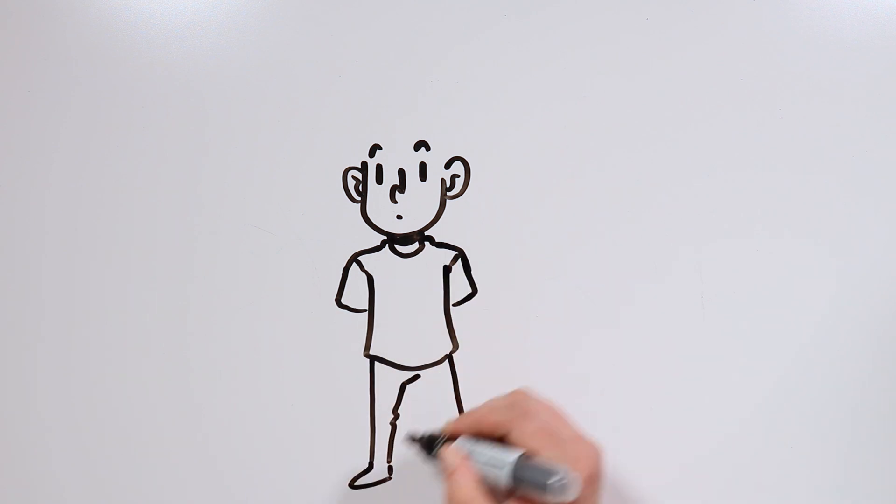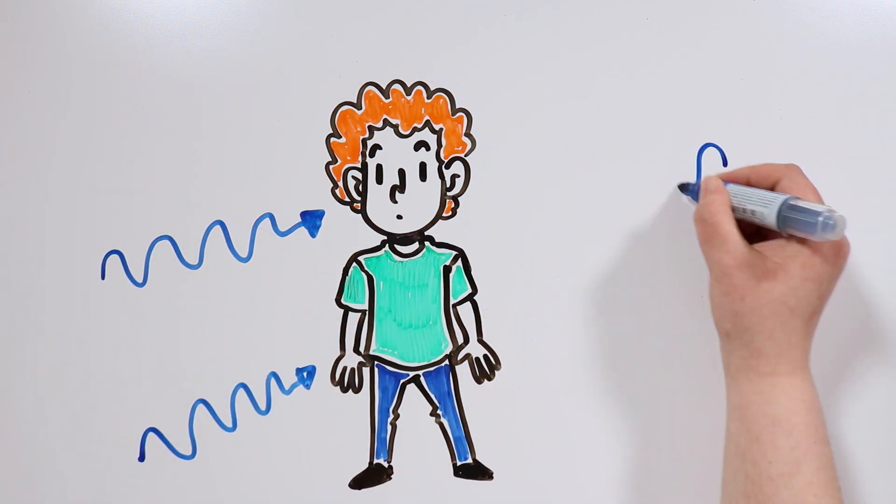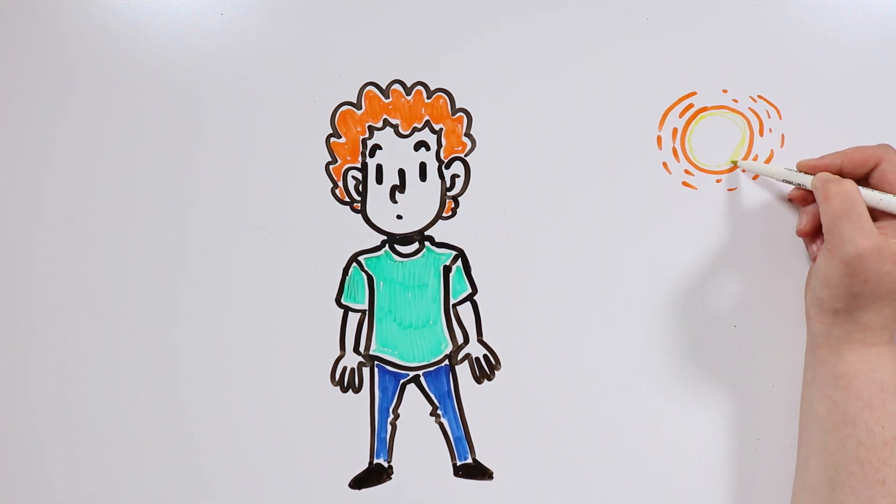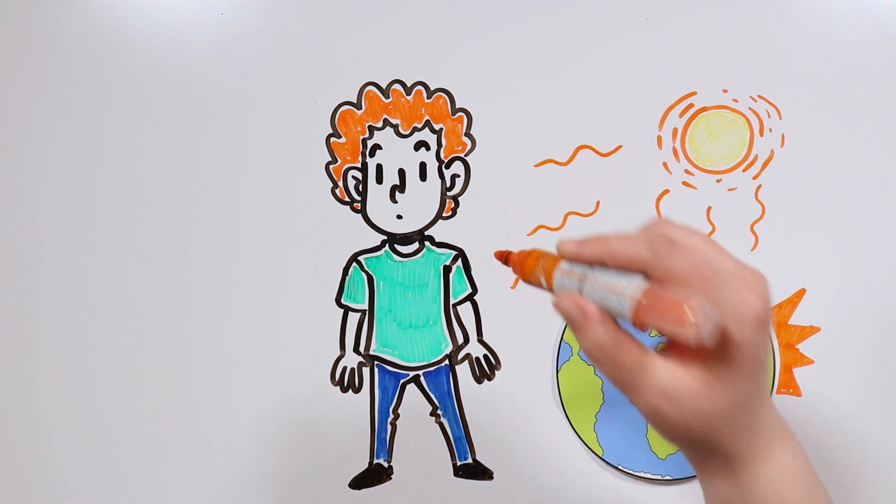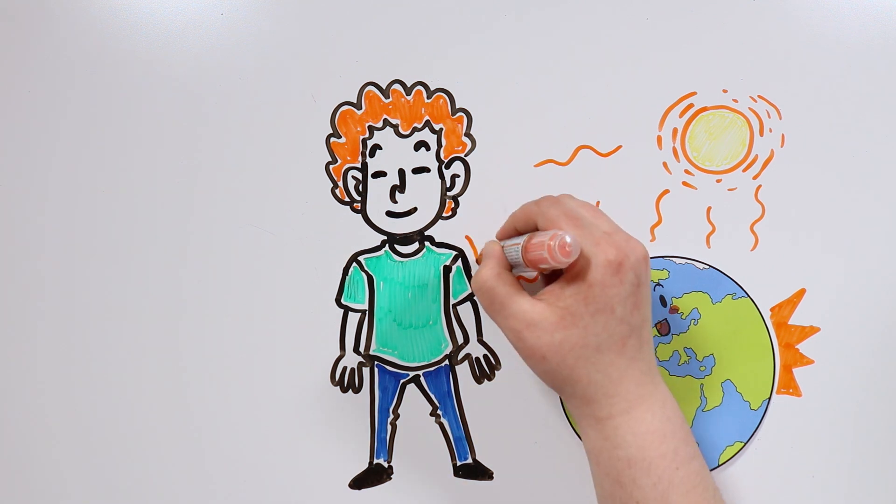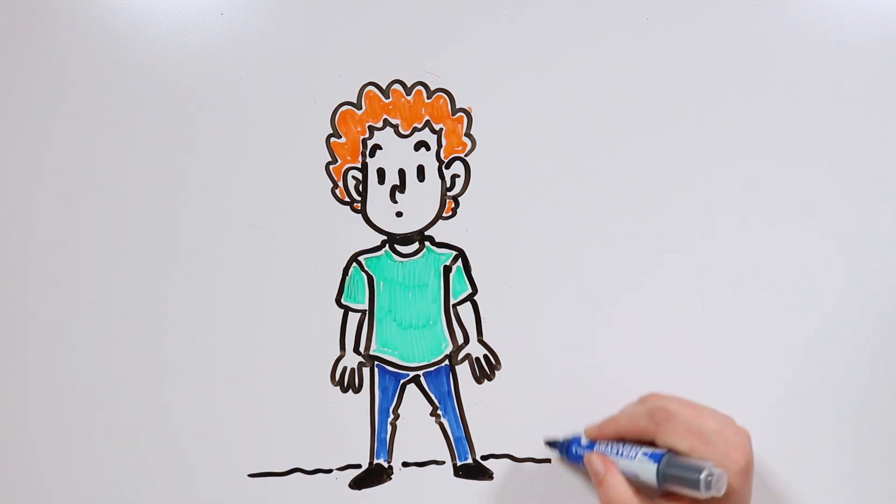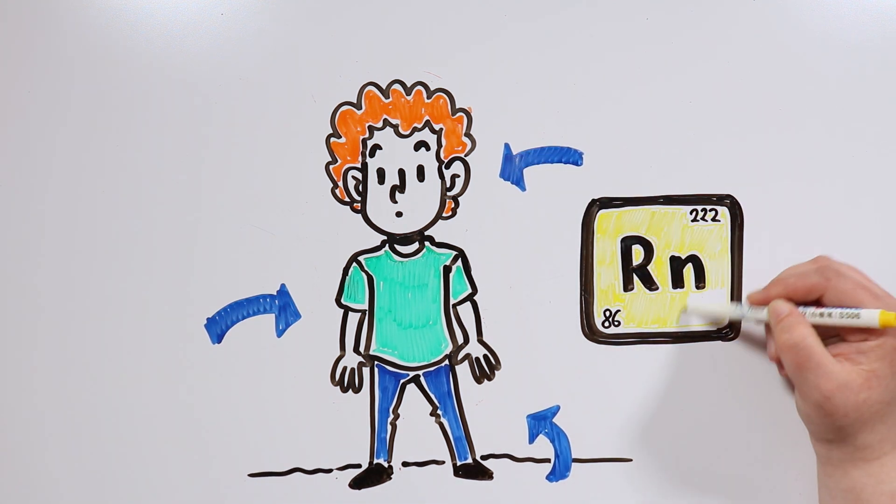Now tiktakers, keep in mind that living beings are constantly exposed to different kinds of radiation, and we actually need them to live. For instance, without the sun's radiation, life would have never emerged on Earth. And without infrared radiation, we wouldn't be able to warm ourselves up. We are also exposed to radioactive materials present in the ground, water and air, such as radon gas.